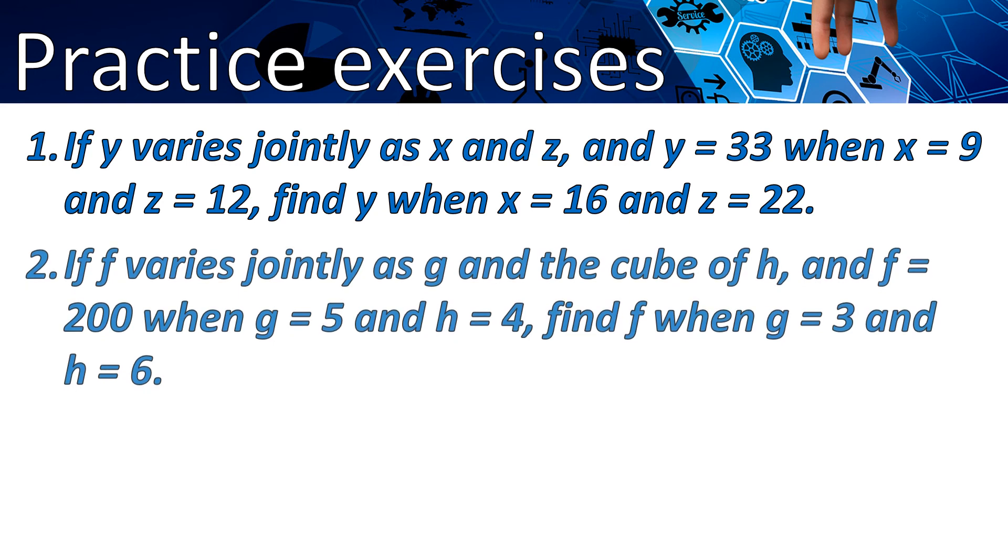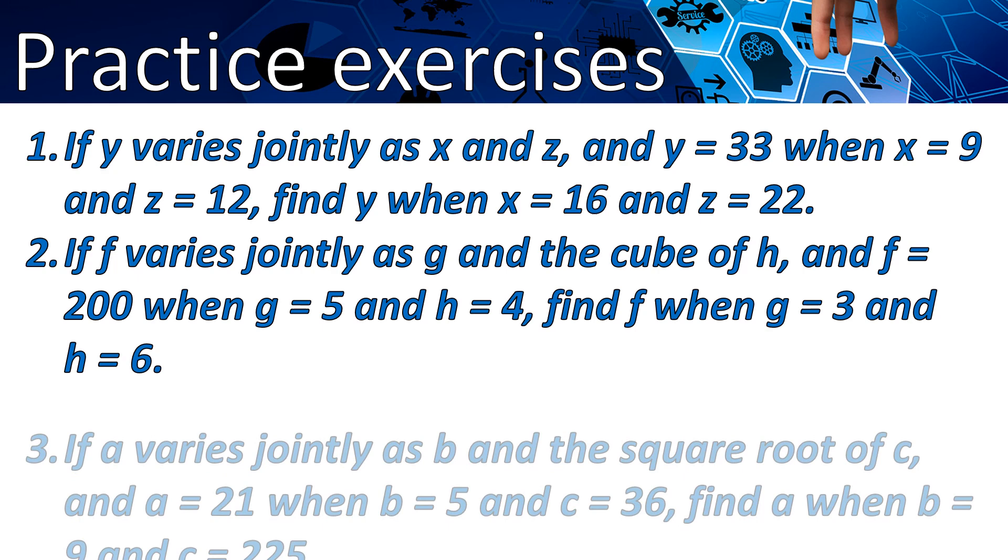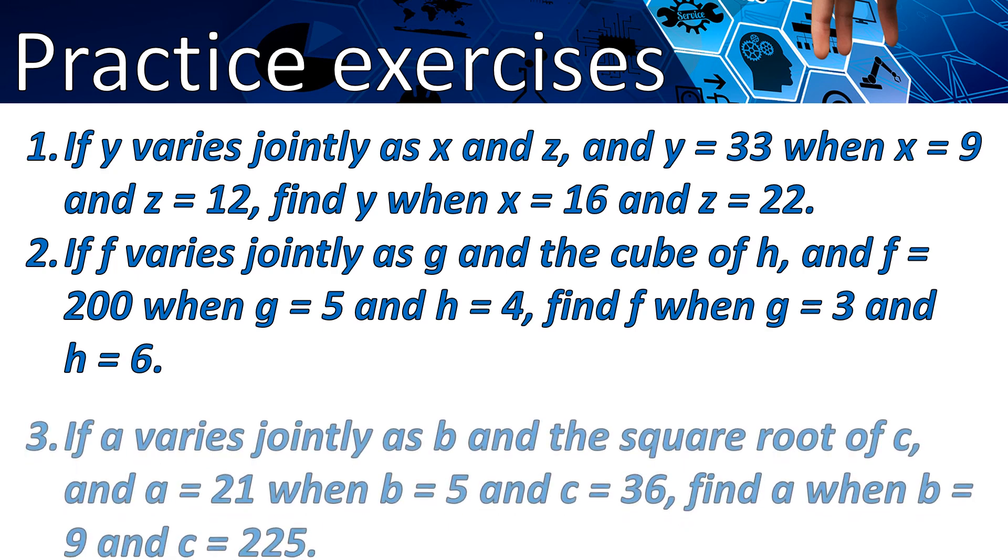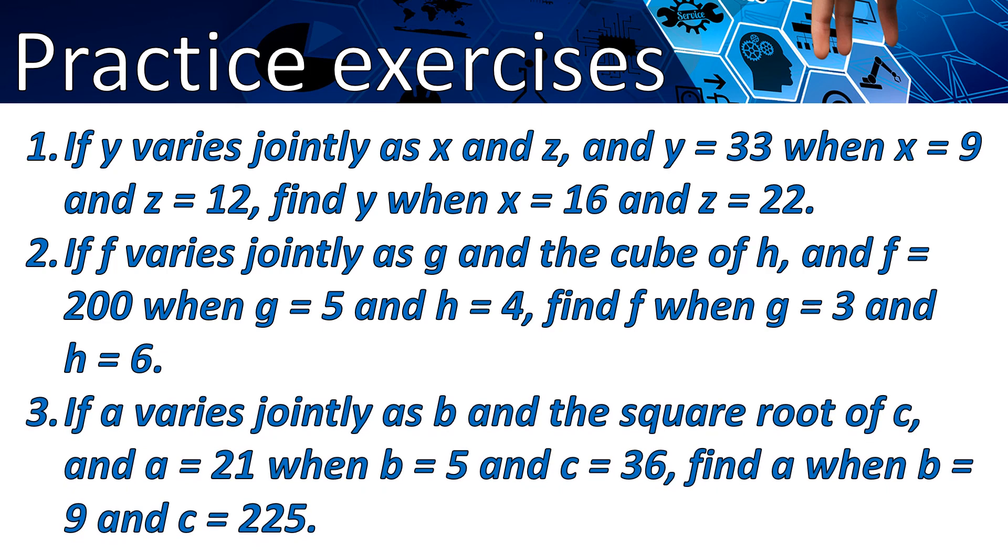Number 2. If f varies jointly as g and the cube of h, and f equals 200 when g equals 5 and h equals 4, find f when g equals 3 and h equals 6.